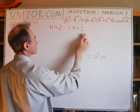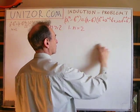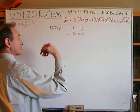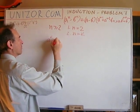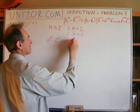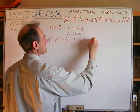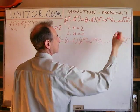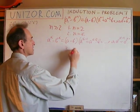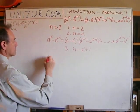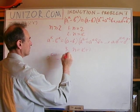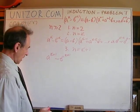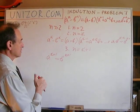The next step: we assume the formula is correct for some n equals k, meaning a to the power of k minus b to the power of k equals a minus b times the sum with powers up to k minus 1. We assume this is correct. Now let's substitute n equals k plus 1, so we need to prove a to the k plus 1 minus b to the k plus 1. How can we prove this using the assumption? Let's think about it — we know the formula is true for k.